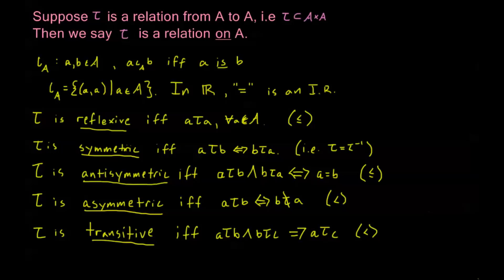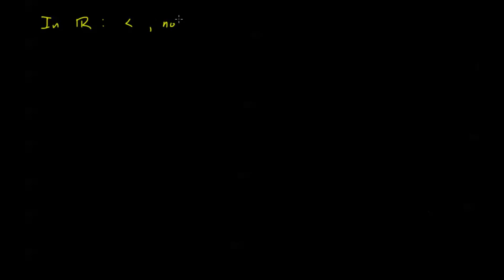That's a lot of terminology, so let's look at some examples. In the real numbers, looking at common relations: less than is not reflexive, because for example two is not less than two — every element of the real numbers would need to be less than itself, which is not true. However, less than is asymmetric.